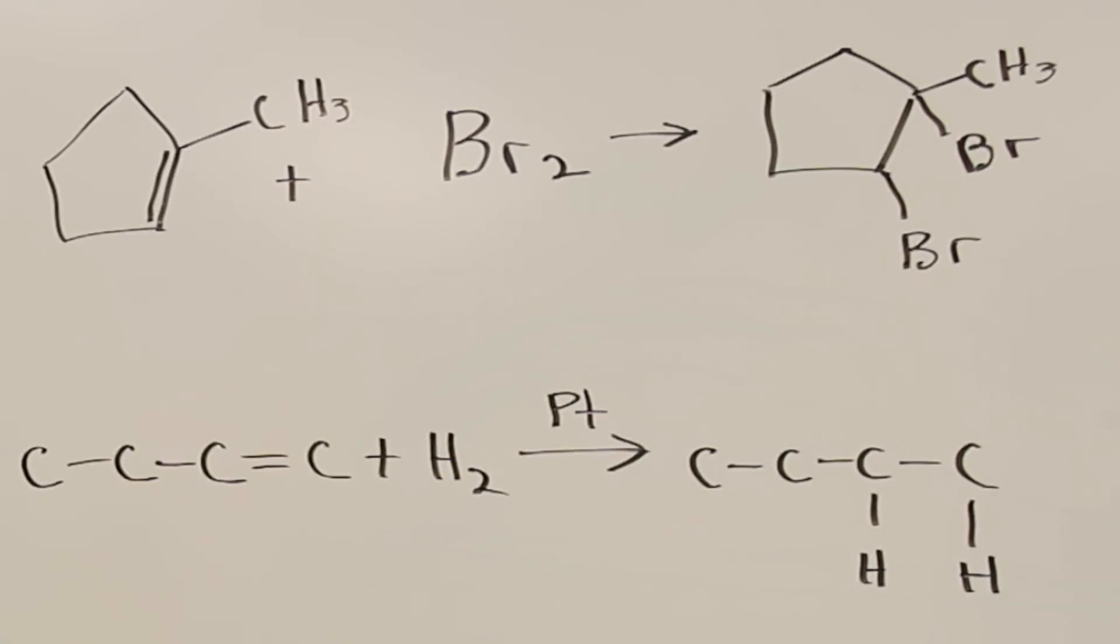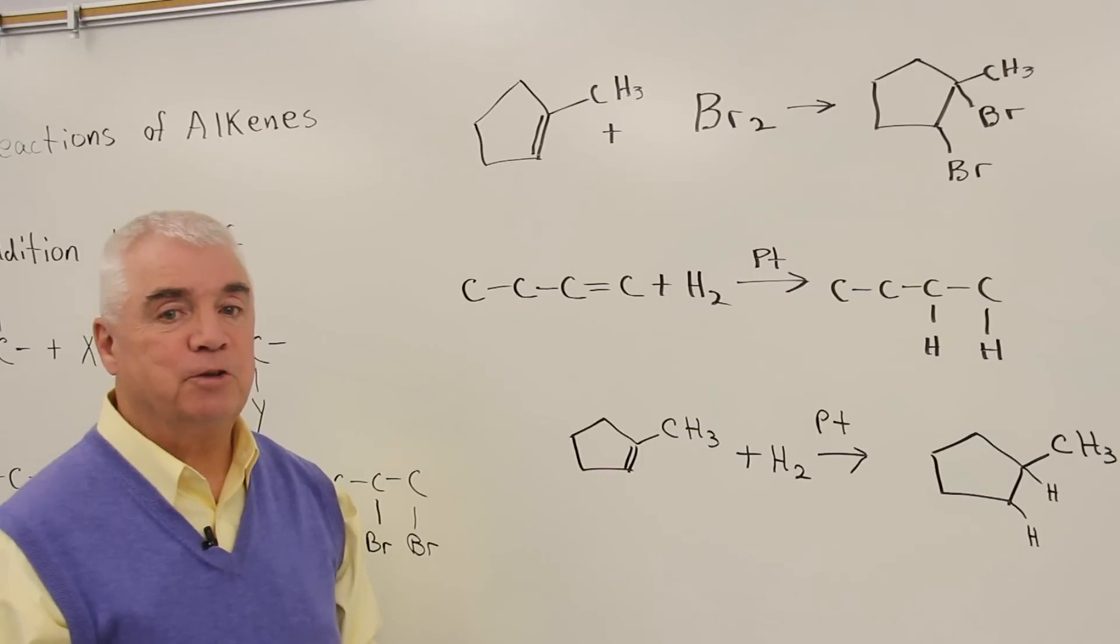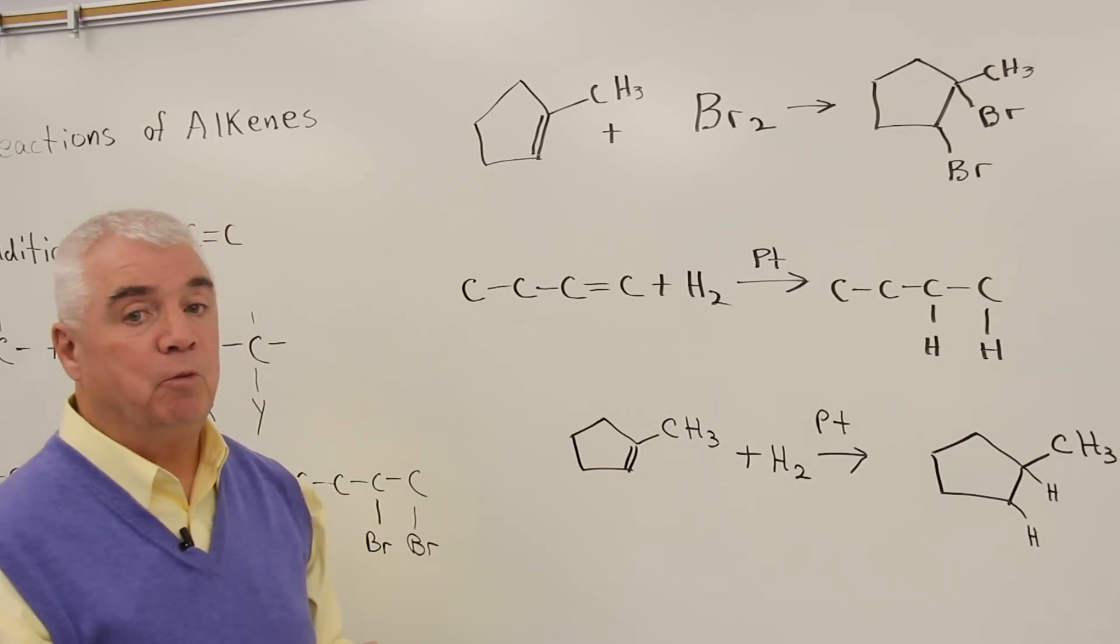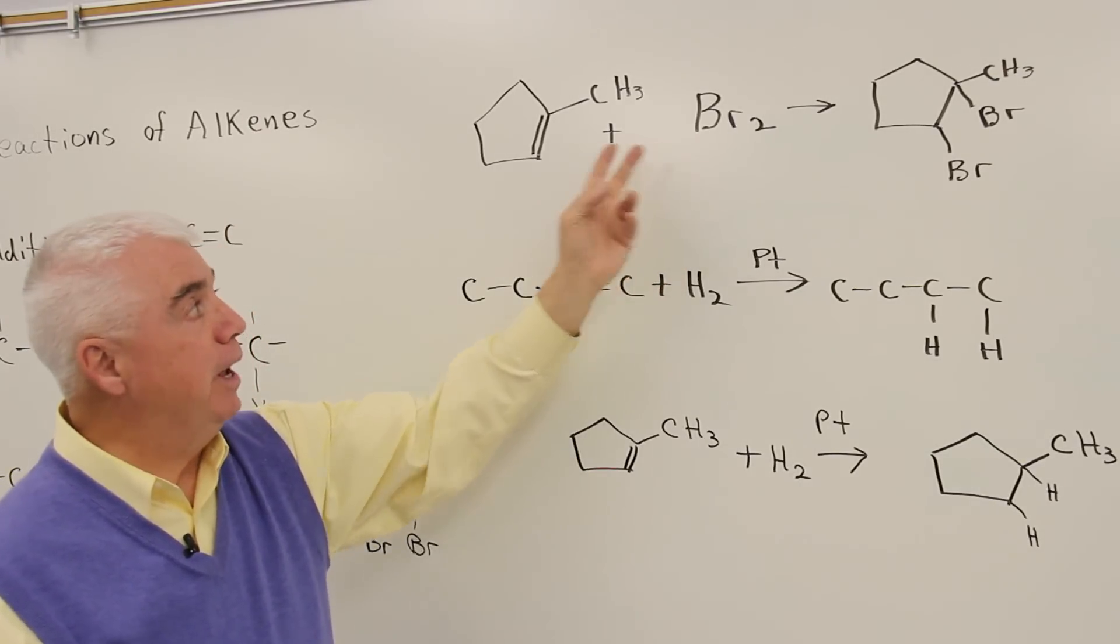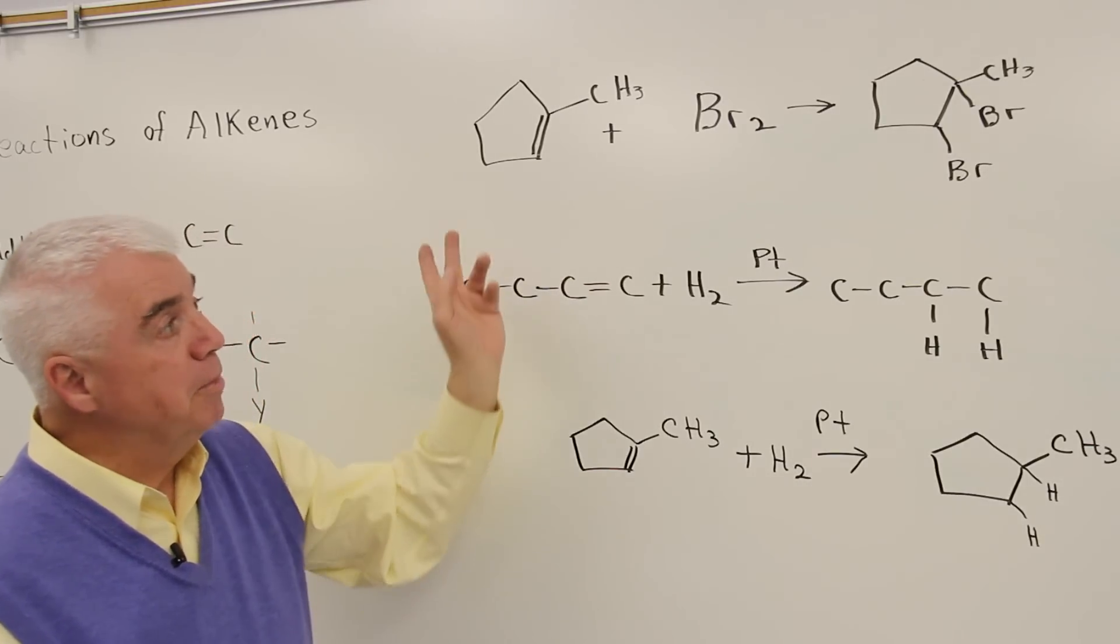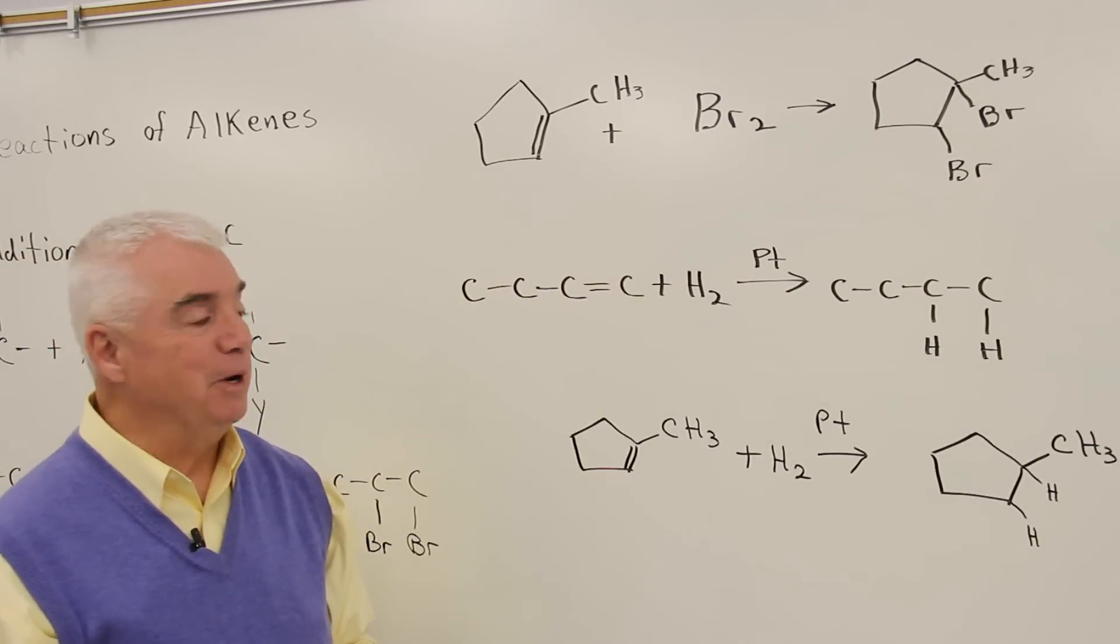So here's our product over there on the right-hand side. This is actually the classic test for the presence of a carbon-carbon double bond, because bromine is red in color. And as you add bromine to this compound, the red color disappears.